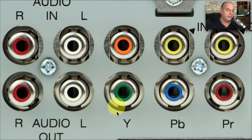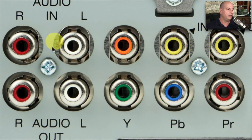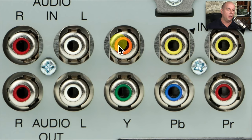If we look closely at these connectors, you can see the Y, PB, and PR used for component video. At the top, there are RCA connectors for composite video — a video in and a video out. You can also see the red and white RCA connectors for audio in and audio out. This device also supports digital audio over an orange RCA connector.